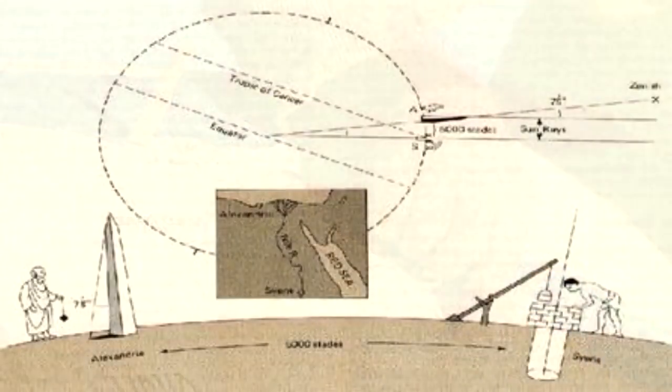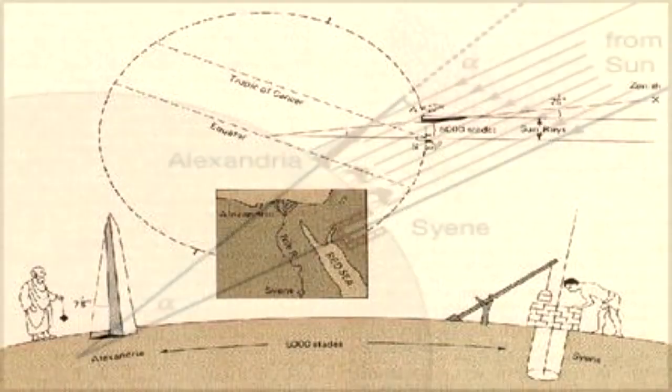The story goes that around 250 BC, a Greek mathematician and philosopher named Eratosthenes noted that at noon during the summer solstice in Syene, the sun cast no shadow and the rays could reach straight to the bottom of his well, yet meanwhile in Alexandria a vertically standing metal rod cast a significant shadow.